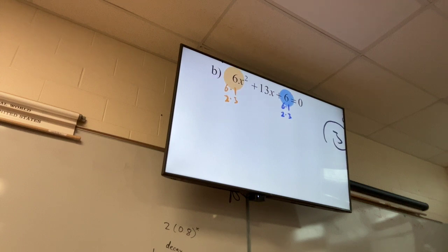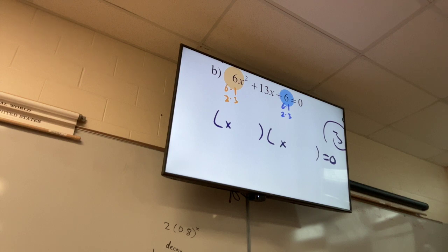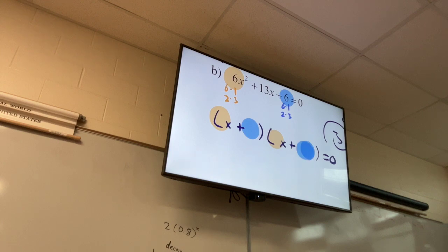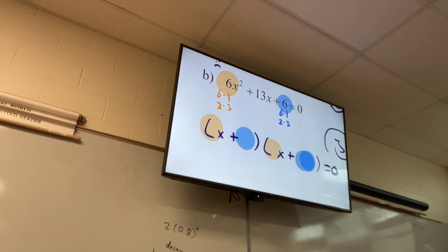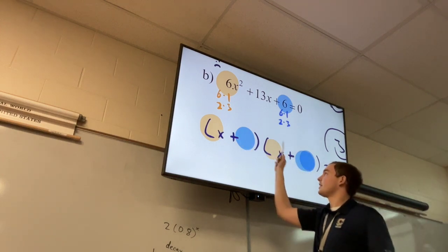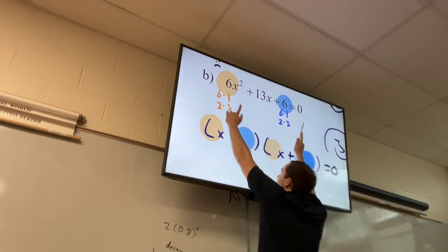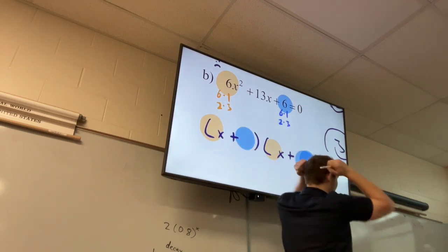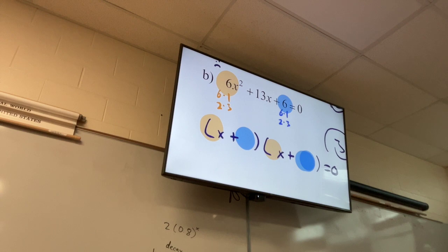Set up our factoring shell — it's all equal zero still. What are my signs going to be? Both positive. I want two orange numbers in the orange space, two blue numbers in the blue space. My signs are the same in both pairs of parentheses, so think same sum. When I multiply my outer numbers and my inner numbers and add those two products, I want their sum to be 13.